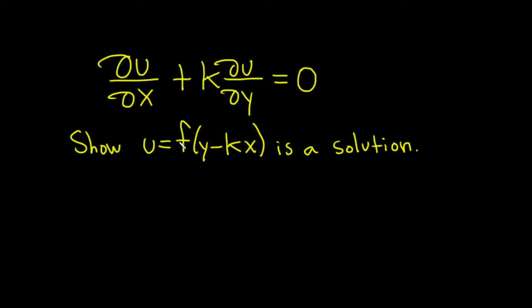To show it's a solution, we basically have to compute the partials del u del x and del u del y, and then plug them in and show that the result is equal to 0. Let's go ahead and do it.